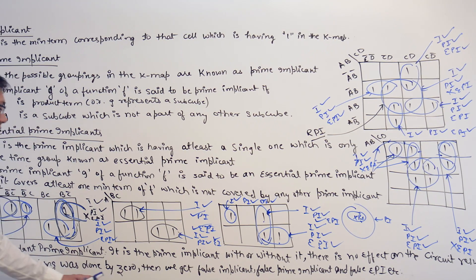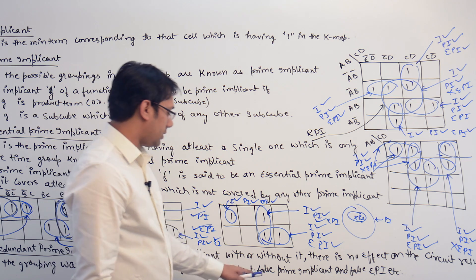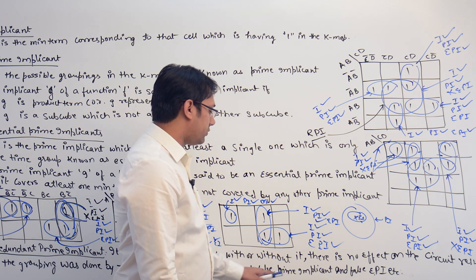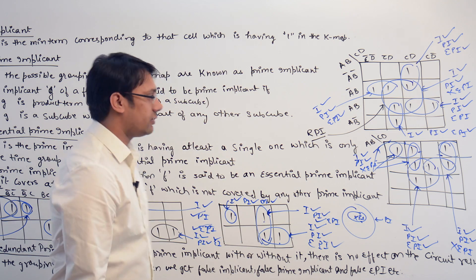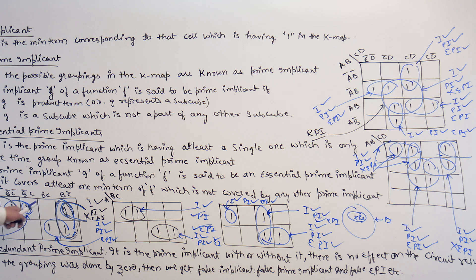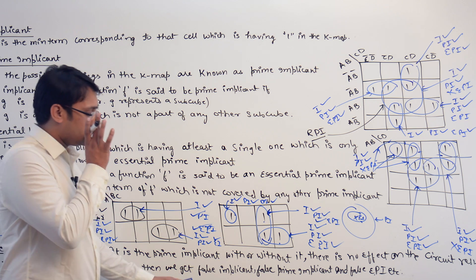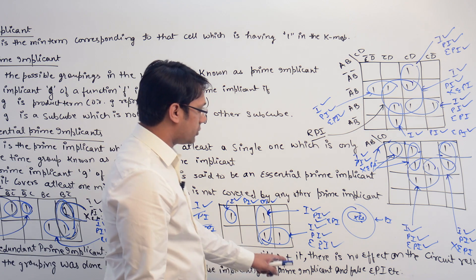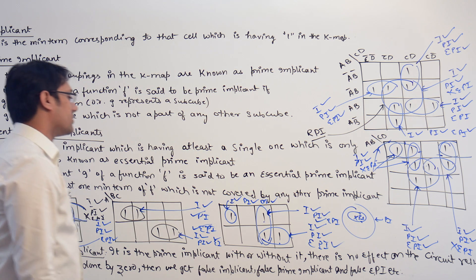Note: if the grouping was done by zeros, then we get false implicant, false prime implicant, as well as false essential prime implicant. For example, here we are doing the grouping with ones, so they are known as implicant, prime implicant, and essential prime implicant. But if we do a grouping by using zeros, then it is called a false implicant, false prime implicant, as well as false essential prime implicant.